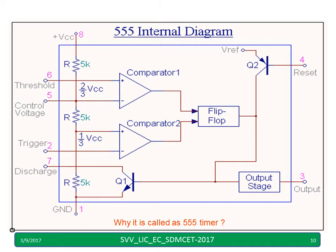Why is it called the 555 Timer? Because it uses three 5k resistors — 5k, 5k, 5k. Hence they call it the 555 Timer.